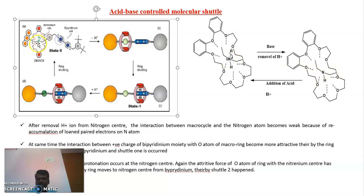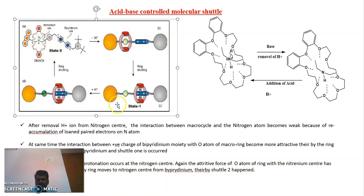So now, if there is no charge on this ammonium side, automatically this crown ether has been attracted towards this bipyridinium positive charge. So this crown ring has been moved from this place and it is going towards this bipyridinium, and this ring reaches the bipyridinium position. So now the shuttle is in the second place — the ring which was presented there is now positioned at the bipyridinium position.